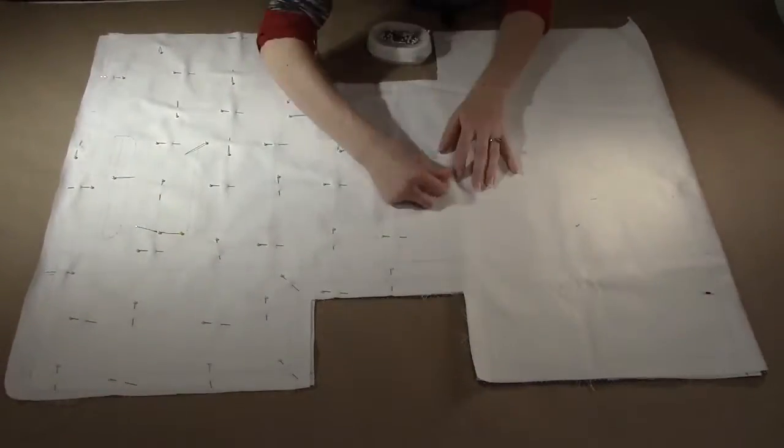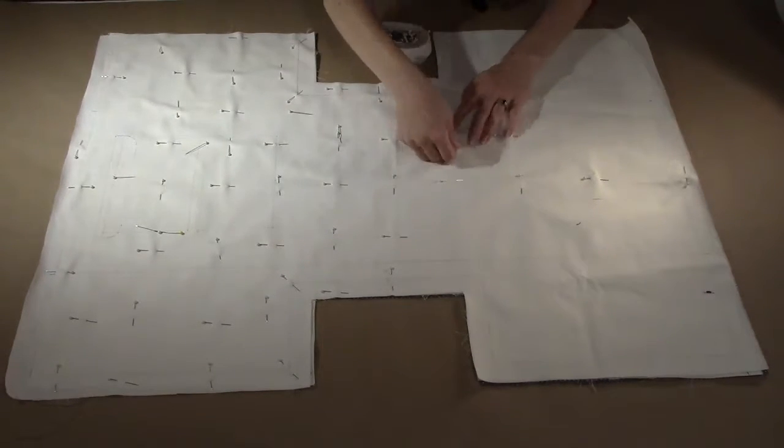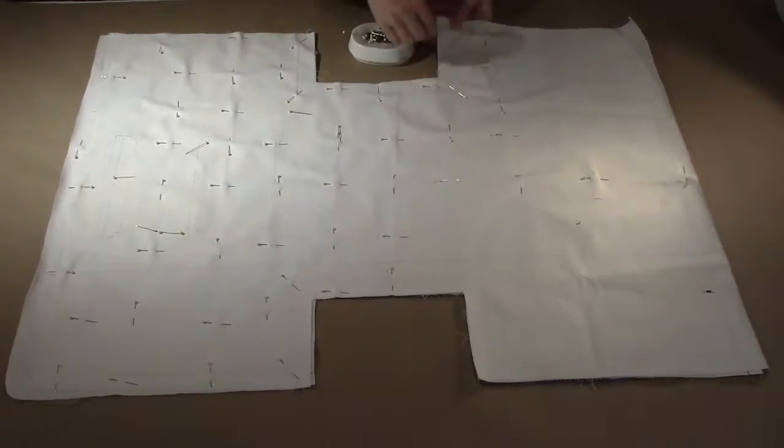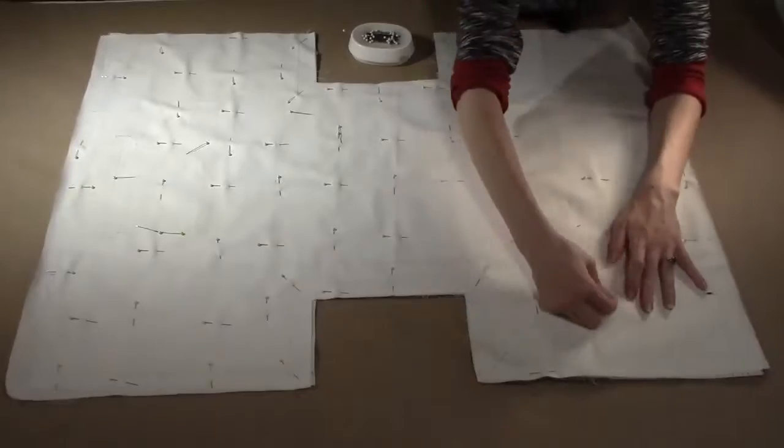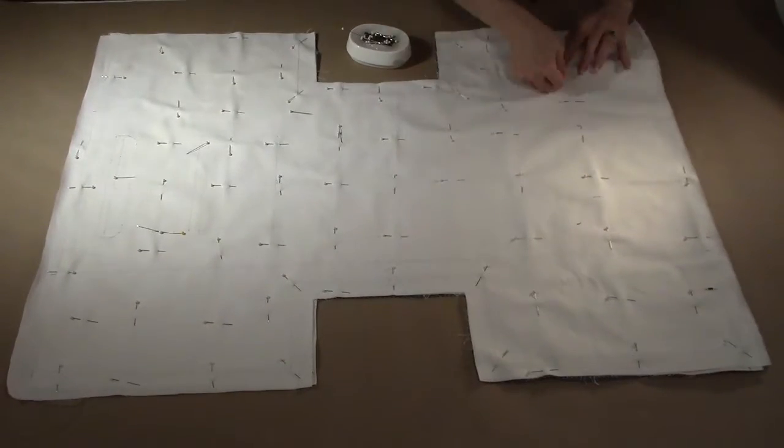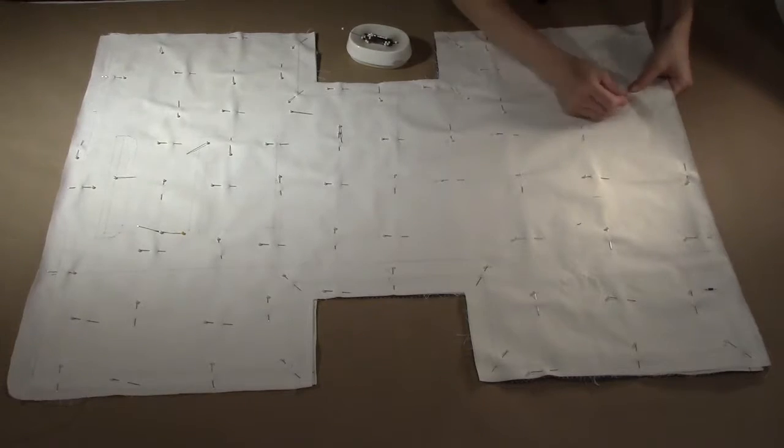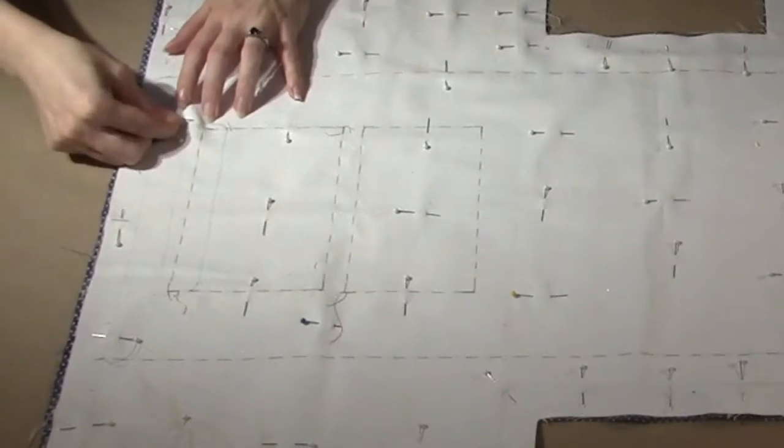If needed, add additional pins at the corners and around the stitch line. Once pinned together, use a single thread of sillamide and a hand sewing needle to thread trace the pocket placements and strap placements.